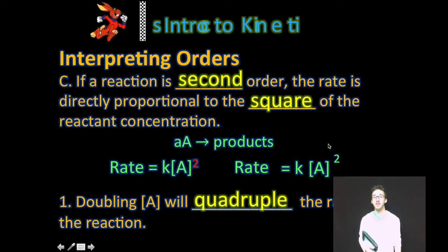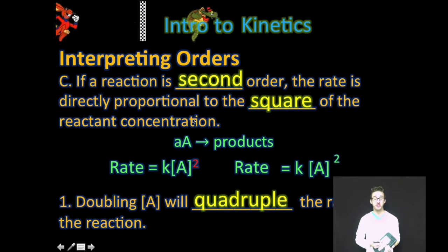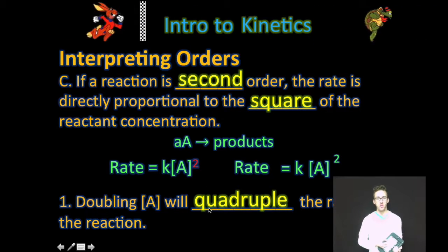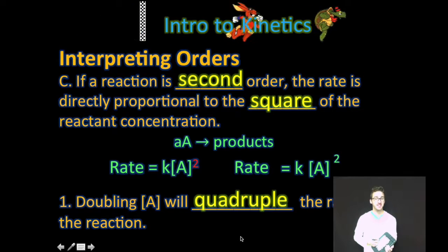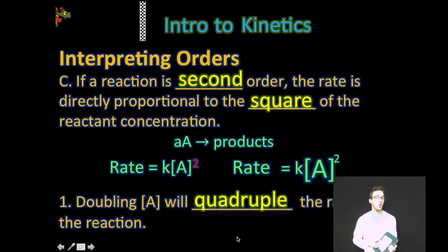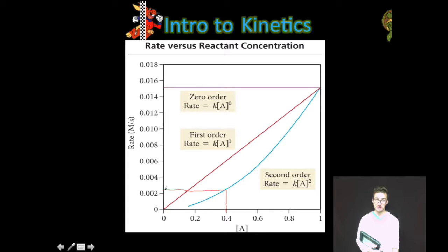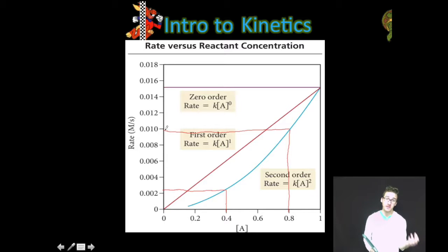If a reaction is second order, then the rate is directly proportional to the square of the reactant concentration. If it is second order with respect to the concentration of our reactant A, you'll see a superscript of two, and here, doubling the concentration of A will quadruple the rate of the reaction. Coming back to this graph, if I start with a concentration of 0.4 molar, the rate of reaction would be about 0.0025 molarity per second. If I double my concentration, notice that the rate of the reaction quadruples to about 0.010 molarity per second.